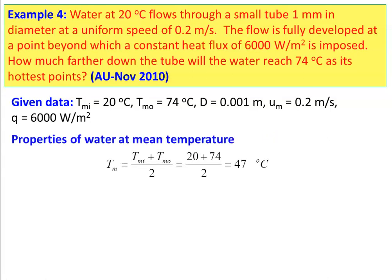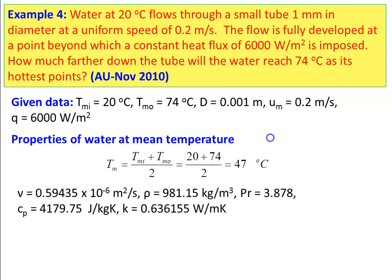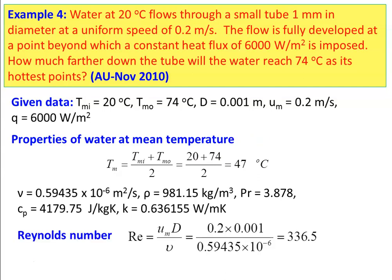Properties of water at mean temperature 47°C (page 22 of data book): ν = 0.59435 × 10⁻⁶ m²/s, density = 981.15 kg/m³, Prandtl number = 3.878, specific heat = 4179.75 J/kg·K, thermal conductivity = 0.63615 W/m·K. Reynolds number = 0.2 × 0.001 / (0.59435 × 10⁻⁶) = 336.5 — laminar flow.